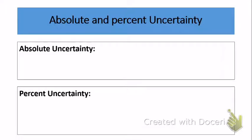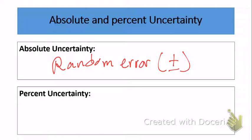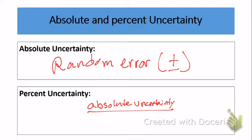First of all, let's define two important terms: Absolute Uncertainty and Percent Uncertainty. Absolute Uncertainty is more or less what the real random error is — the plus or minus value. Percent Uncertainty is taking the absolute uncertainty, dividing it by the measured value, and then multiplying by 100 to get it as a percentage.